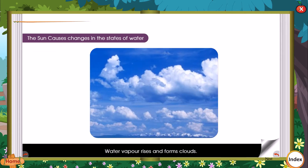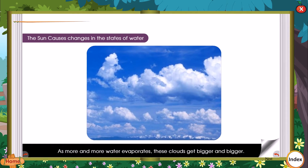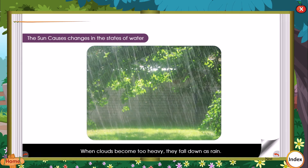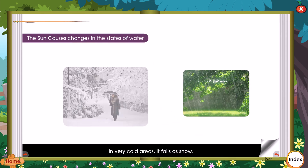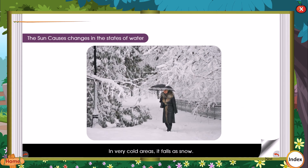Water vapour rises and forms clouds. As more and more water evaporates, these clouds get bigger and bigger. When clouds become too heavy, they fall down as rain. In very cold areas, it falls as snow.